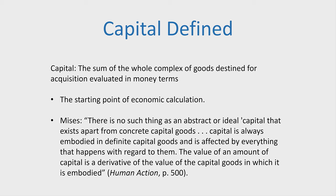Capital is the sum of the monetary value of the capital goods used by a firm — that is the starting point of economic calculation. It is also important to note that capital is not merely an amount of money. Mises says in Human Action: 'There is no such thing as an abstract ideal capital that exists apart from concrete capital goods. Capital is always embodied in definite capital goods and is affected by everything that happens with regard to them.'